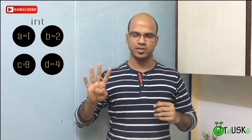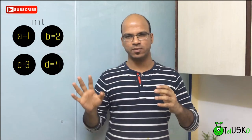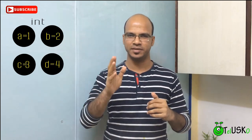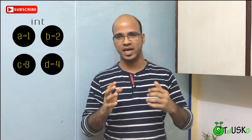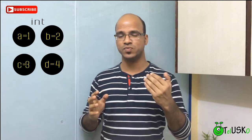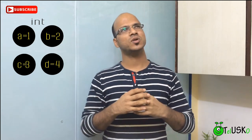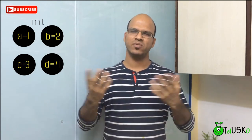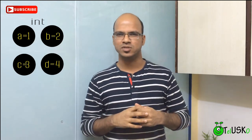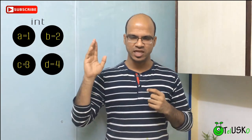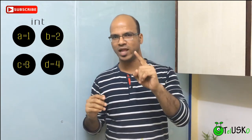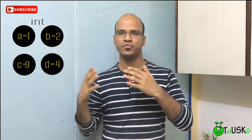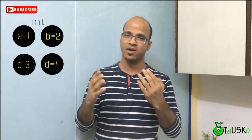Let's say you have four variables, all of the same type which is int. So we have a, b, c, and d. These four variables will have four values: one, two, three, four. In each variable we have one value — in a we have one, in b we have two, in c we have three, in d we have four.